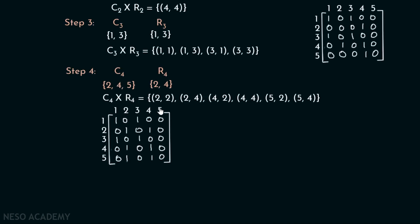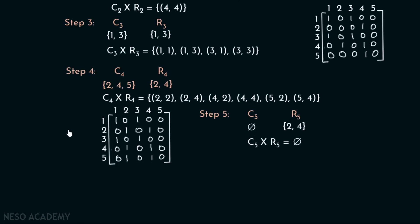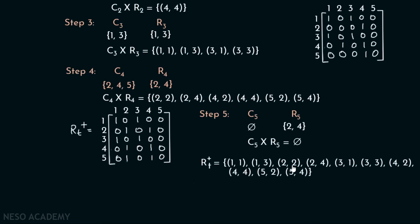In Step 5, we consider column 5 and row 5. C5 = {5}, and in row 5, the value 1 is at positions 2 and 4, so R5 = {2,4}. C5 × R5 = {(5,2),(5,4)}, but these are already present. All 5 steps are now finished. The final matrix is R T+, which as ordered pairs is {(1,1),(1,3),(2,2),(2,4),(3,1),(3,3),(4,2),(4,4),(5,2),(5,4)}.